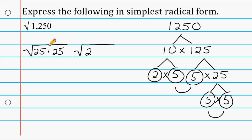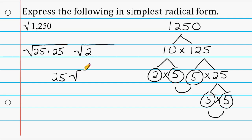Notice that underneath the first radical symbol we are multiplying the same number by itself, which means the square root of whatever that produces is going to be 25. 25 times 25 is 625, but because we're multiplying the same number by itself, we can just take that one number and write it one time. Then we just bring down the square root of 2. So the square root of 1250 in simplest radical form is 25 times the square root of 2.